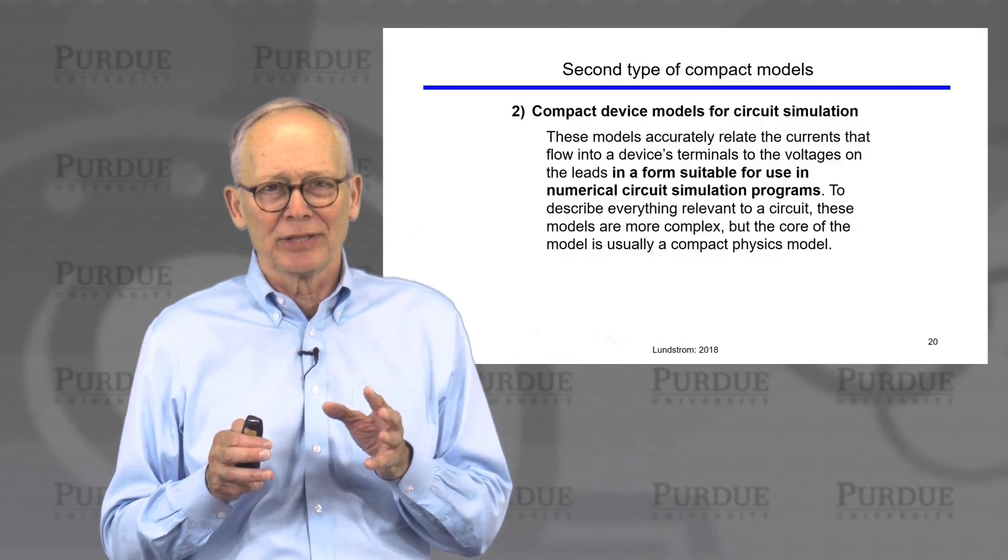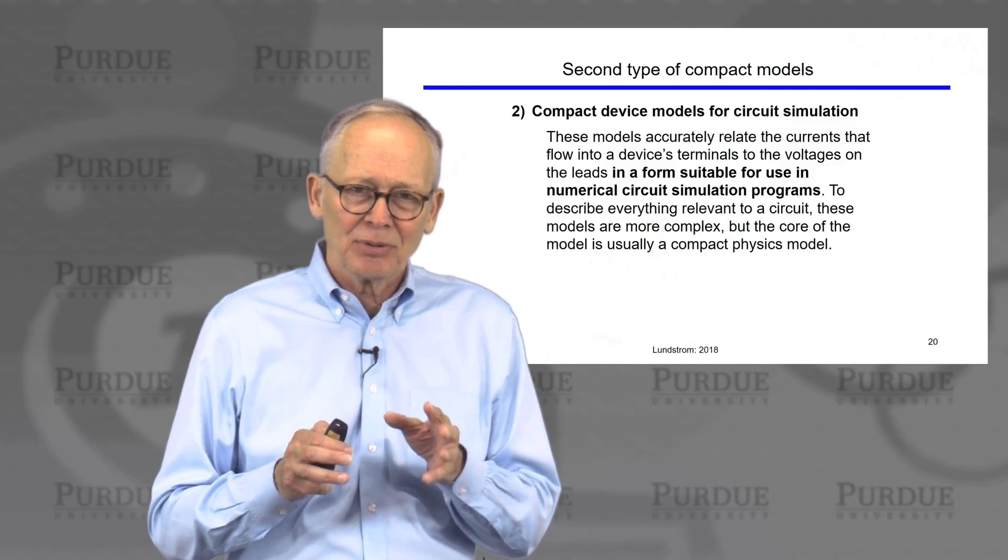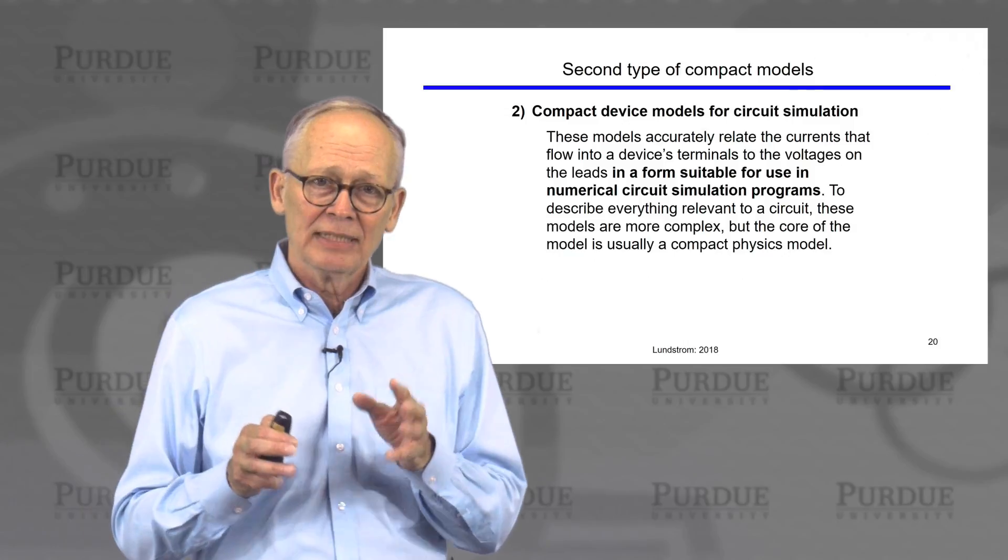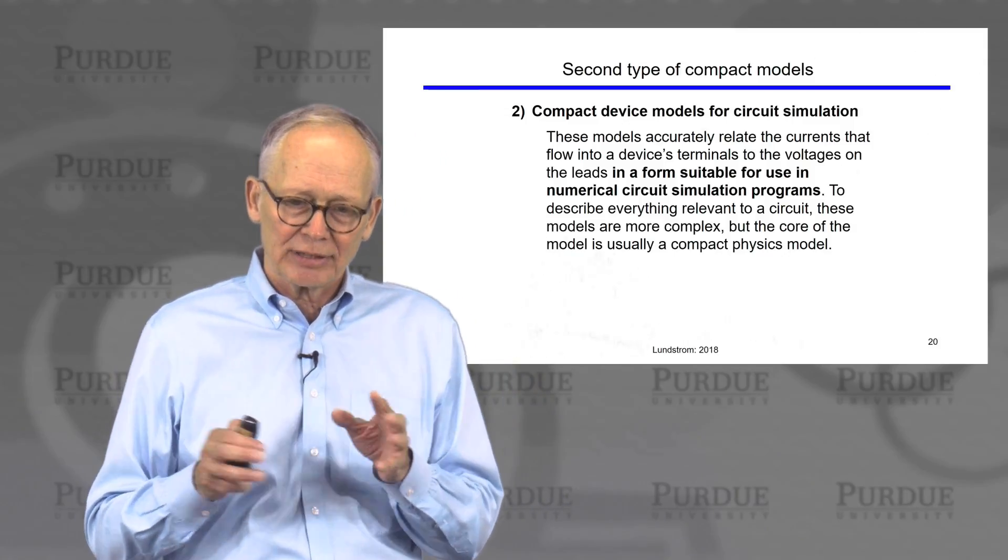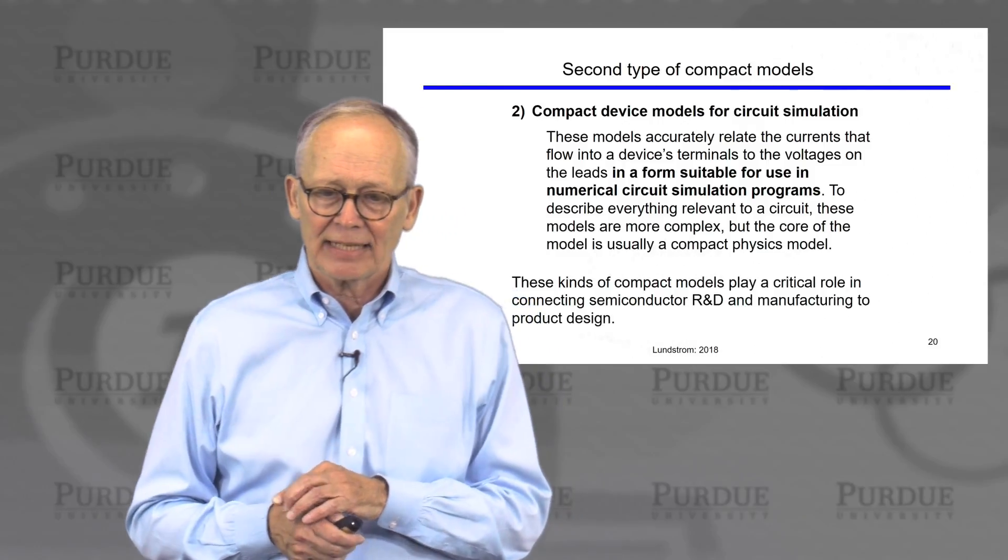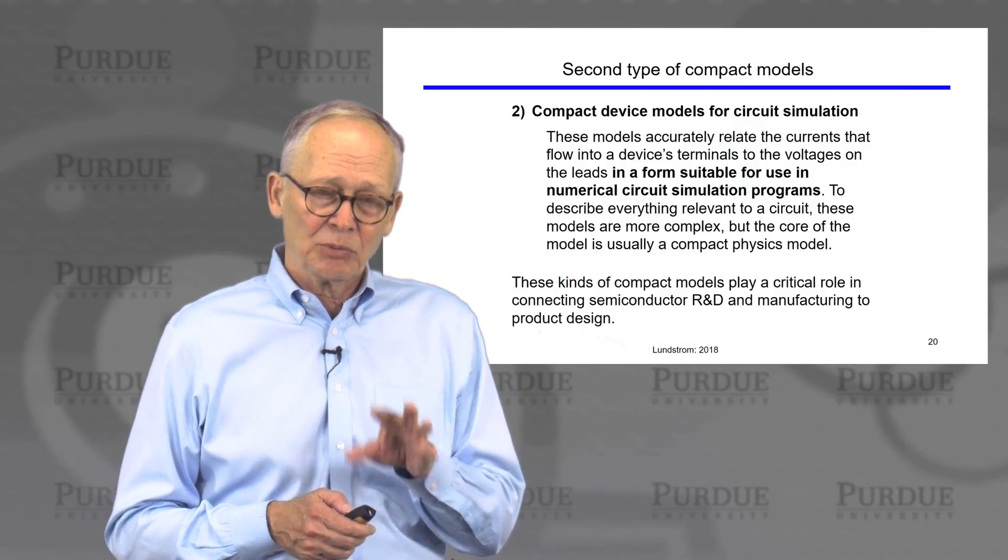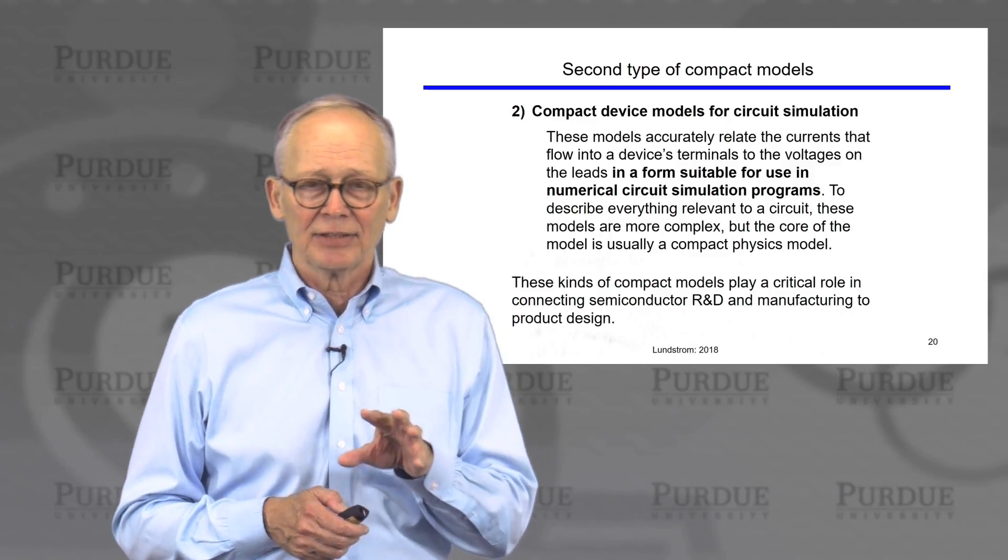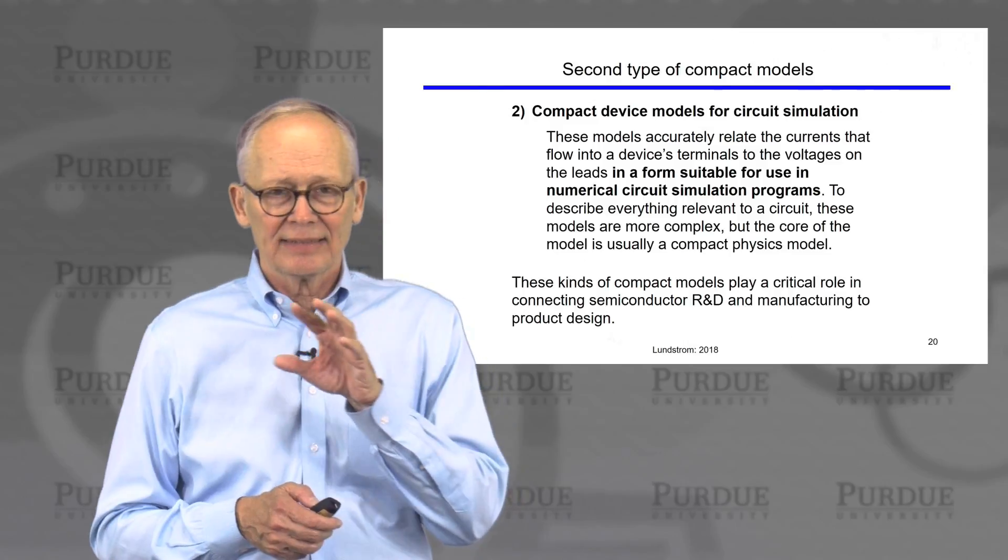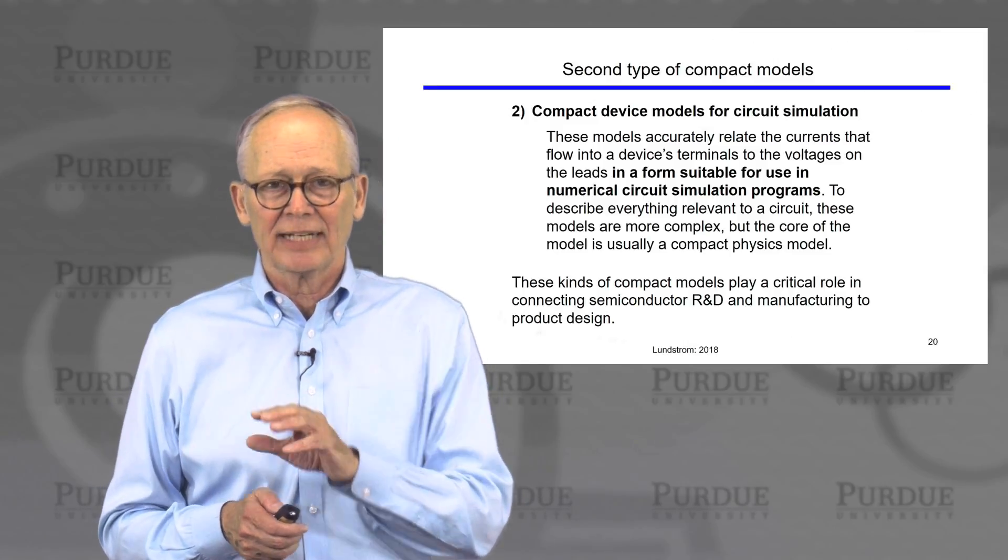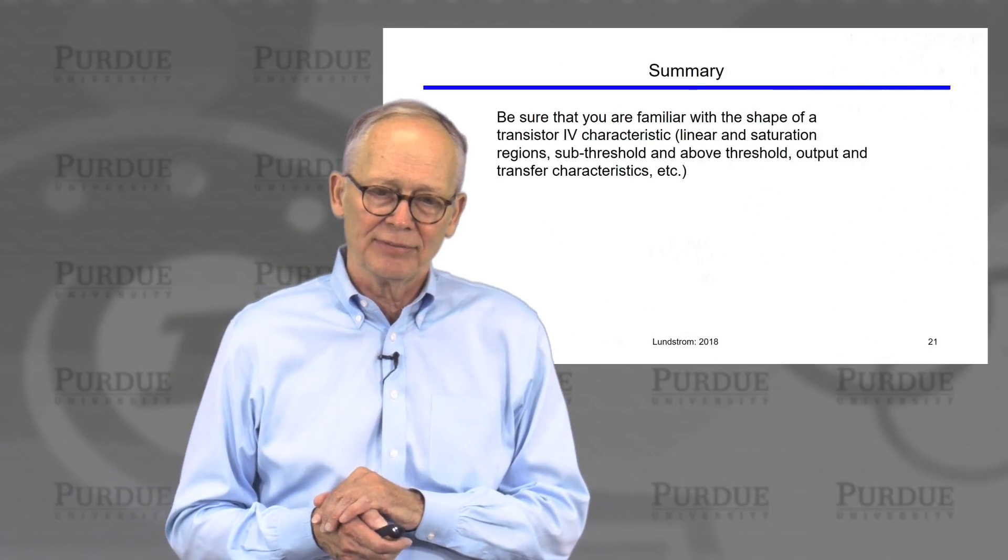The second type of compact model, and what most people mean in electronics when they say the word compact model is a simple, analytical, usually model that is intended for use in circuit design and circuit simulation. So these kinds of compact models play a very important role. They're what allow circuit designers to design complex circuits, they connect the manufacturing process to the actual circuit design process, so they play a critically important role in technology development.